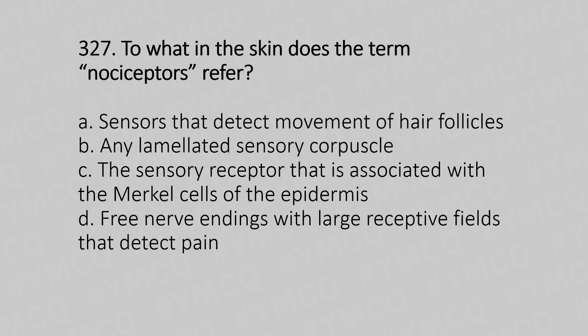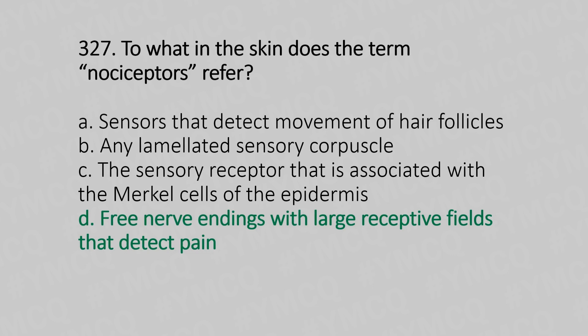Question number 327: To what does the term nociceptor refer? Option A: sensors that detect the movement of hair follicles. Option B: any lamellated sensory capsule. Option C: sensory receptors associated with Merkel cells of the epidermis. Option D: free nerve endings with large receptive fields that detect pain. The answer is option D.